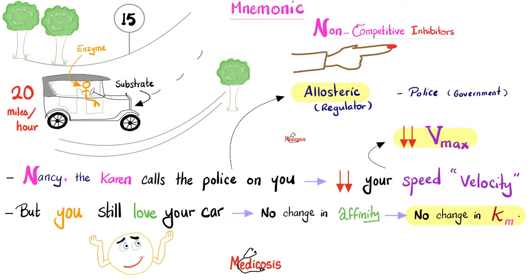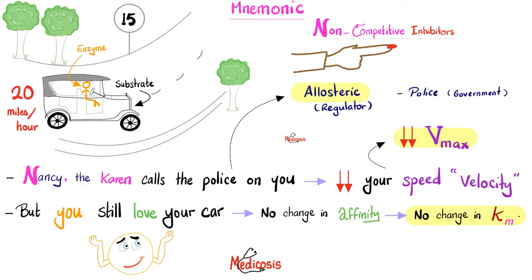Next, non-competitive inhibitors — Nancy the Karen. You were driving your car; you are the enzyme, your car is the substrate. The speed limit was 15 but you went over it. Nancy started yelling, 'I'm gonna call the police on you.' After hearing this, you decrease your speed — VMAX goes down. But you still love your old vintage Ford Model T car, so there is no change in affinity and no change in KM.